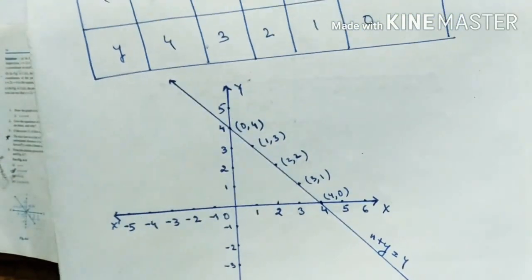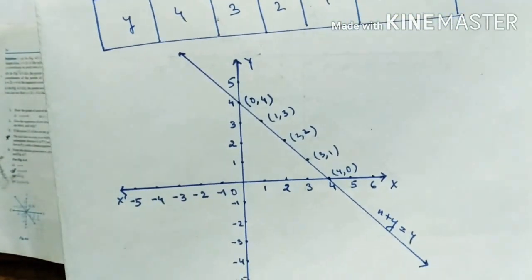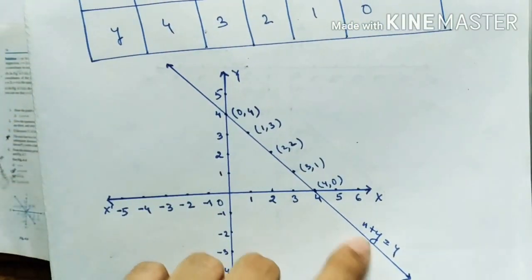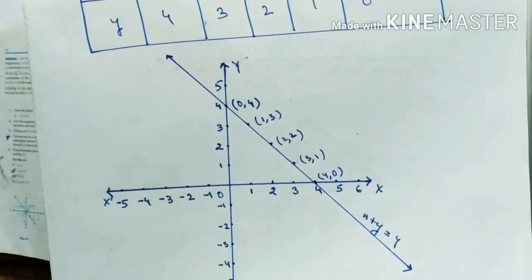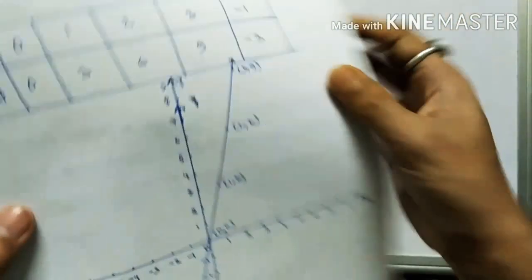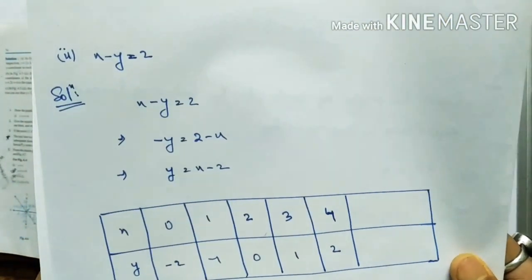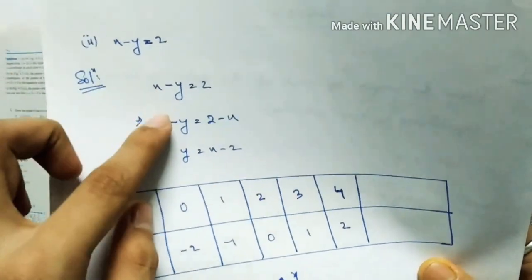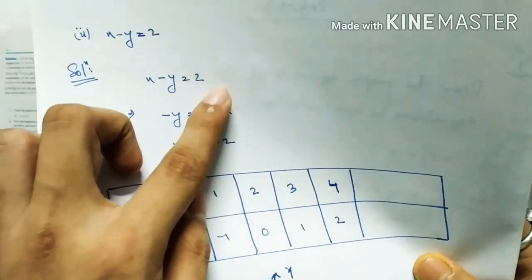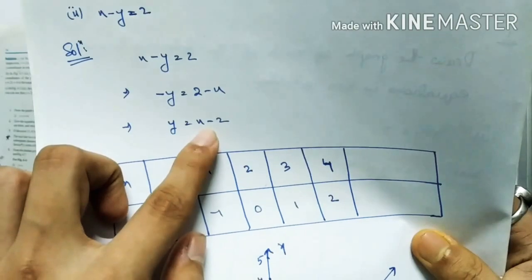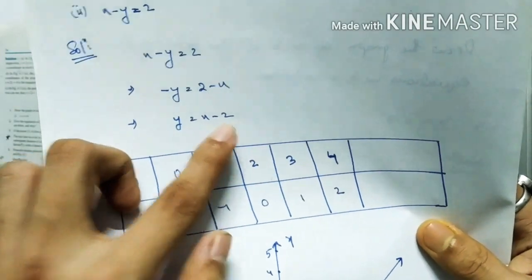This straight line represents the equation x plus y equals 4. Similarly, you can draw the second graph for the equation x minus y equals 2. Rearranging: minus y equals 2 minus x, so y equals x minus 2.